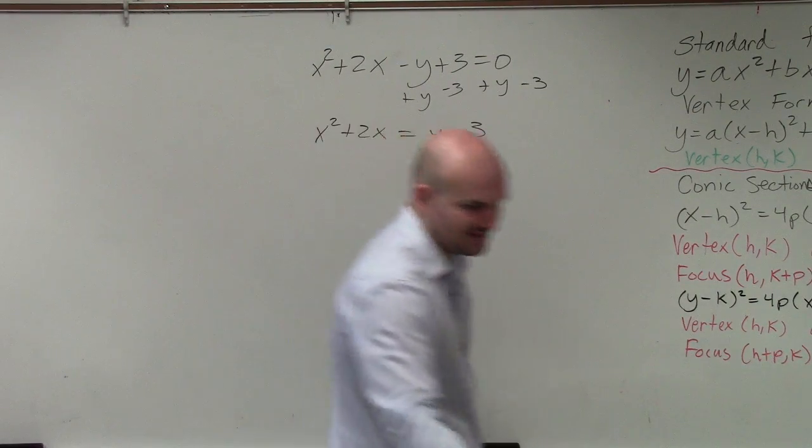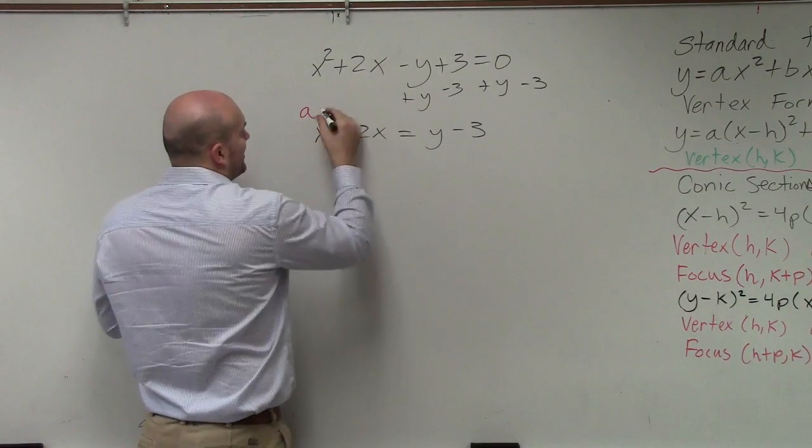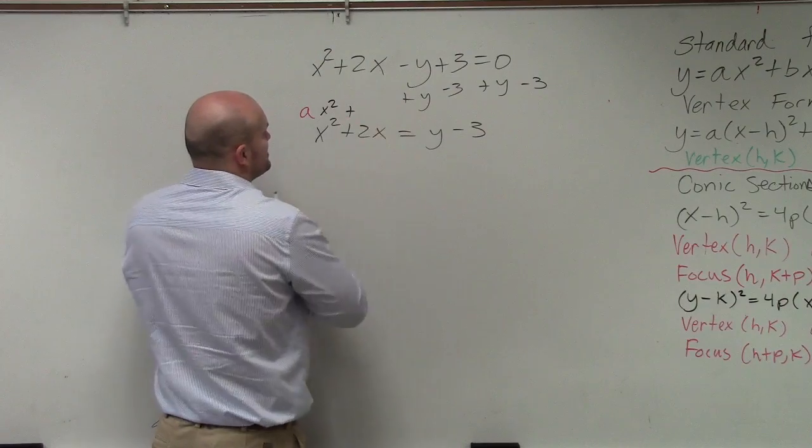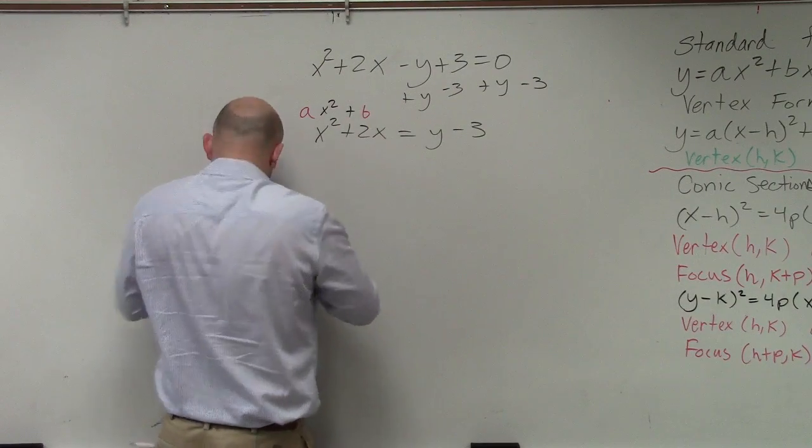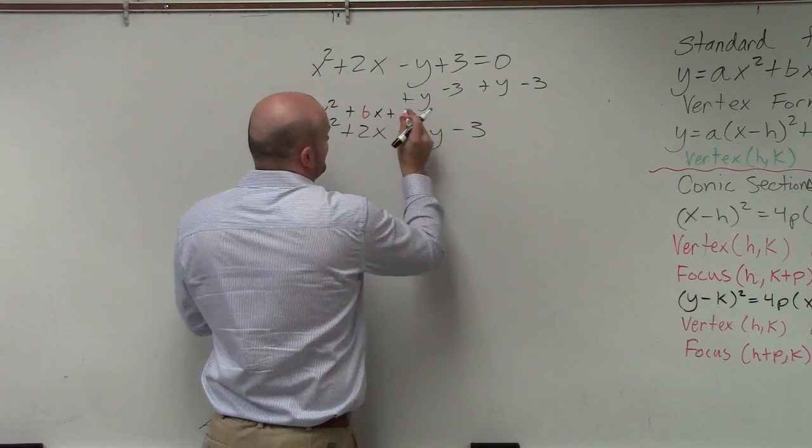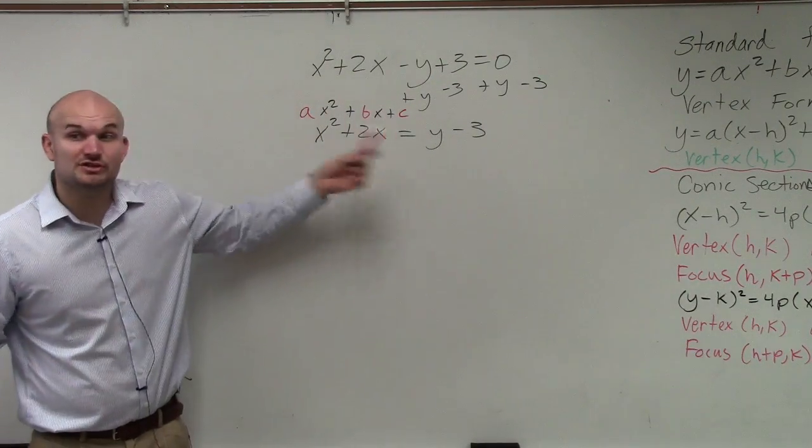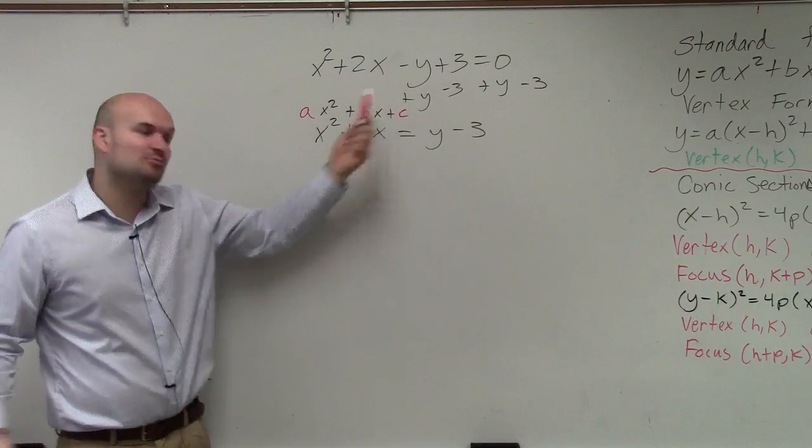Now you guys could see that we have this as in kind of standard form, right? ax squared plus bx plus c. But we don't have a c there, right? We don't have a c. So what we need to do is we need to create a c that's going to complete the square.